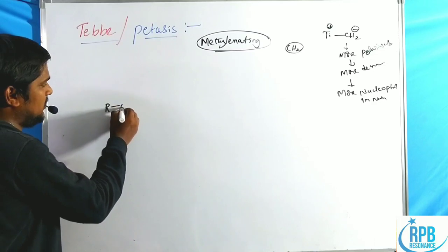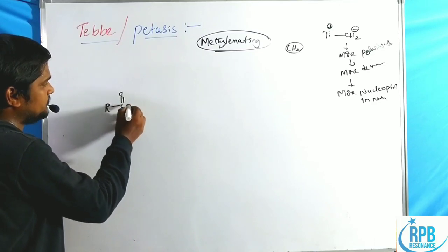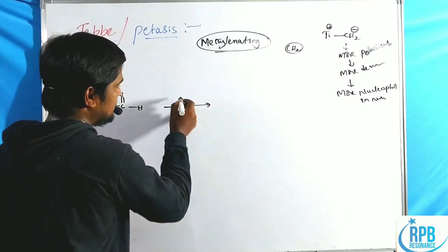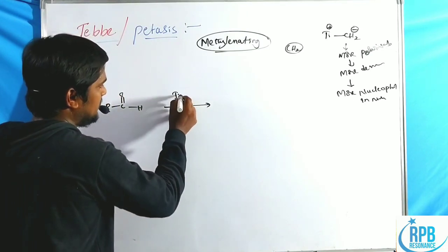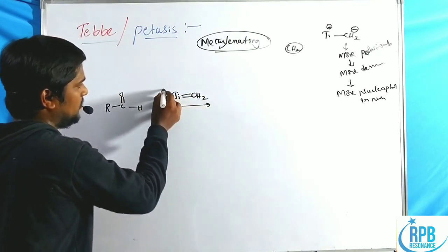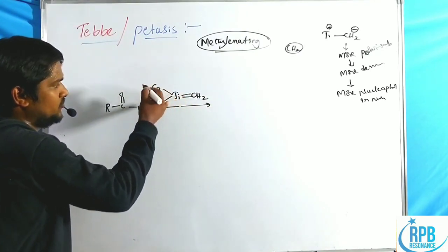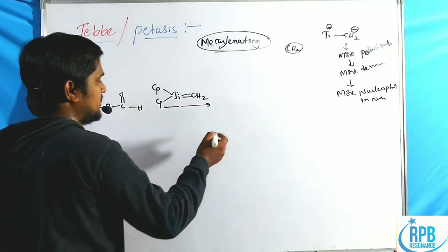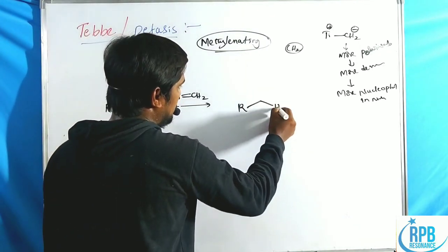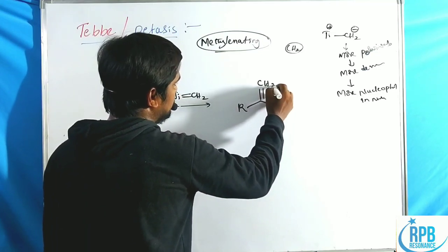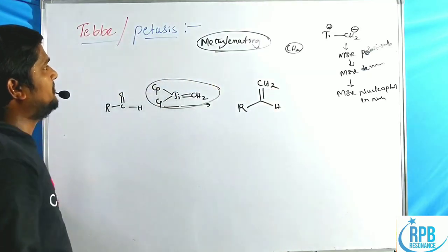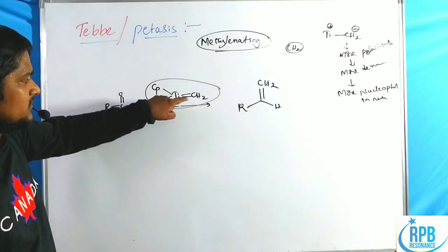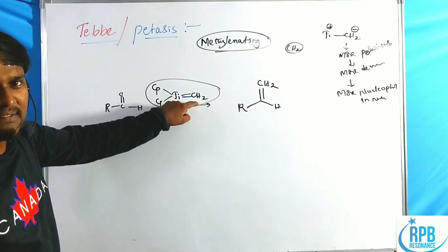The general representation of Tebbe olefination involves treating an aldehyde, ketone, ester, or amide with a titanium–CH₂ complex bearing two cyclopentadienyl (Cp) groups, which creates a C=CH₂ double bond at the carbonyl position.